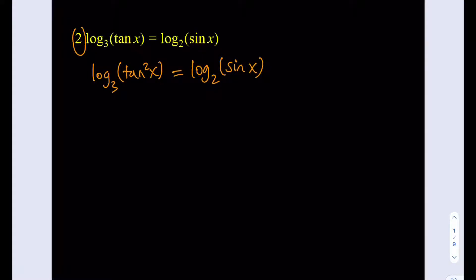And the second step, since the bases are different, I can't really actually solve this directly. So what I'm going to do is I'm going to use substitution. Let's go ahead and set it equal to t. So from here I'm going to be getting two things. First of which is tangent squared x equals 3 to the power t and sin x equals 2 to the power t.